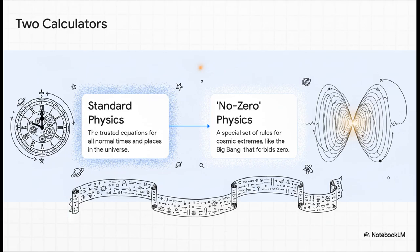So how does DLM actually work? This is where it gets really clever. It doesn't just toss out all the physics we know and love. Instead, it says we should think of it like having two different calculators. For all our normal, everyday science, we use our standard physics calculator. It works great, but for the really extreme stuff, like the instant of the big bang, or the core of a black hole, we pull out a special no-zero calculator. And this one has one golden rule. It absolutely refuses to use the number zero. No dividing by zero, no letting anything become truly nothing.